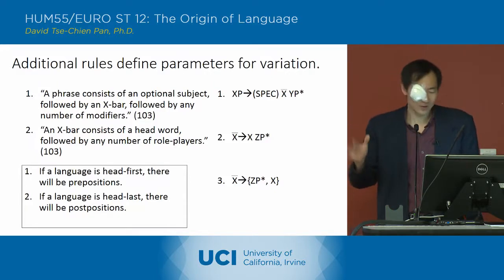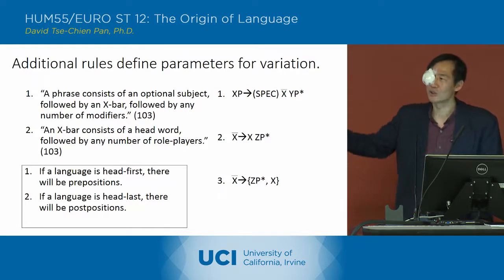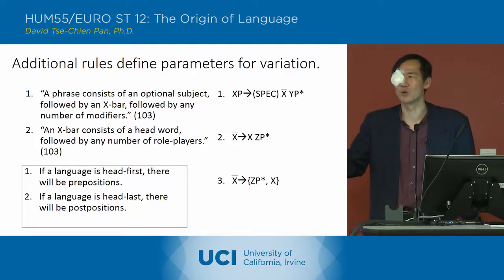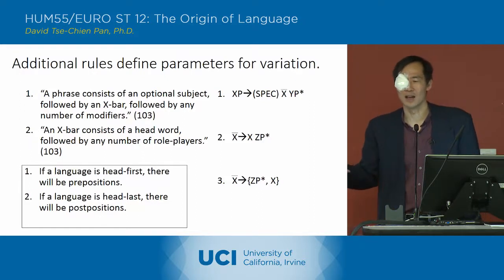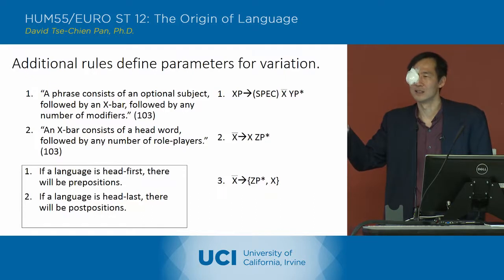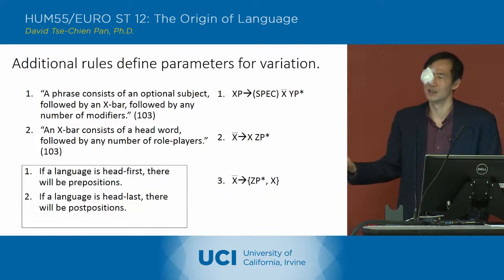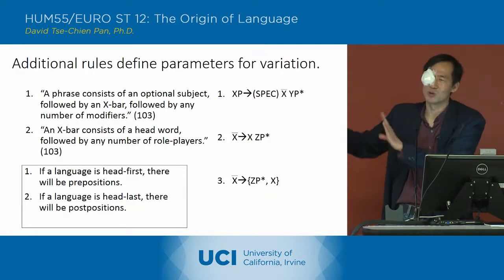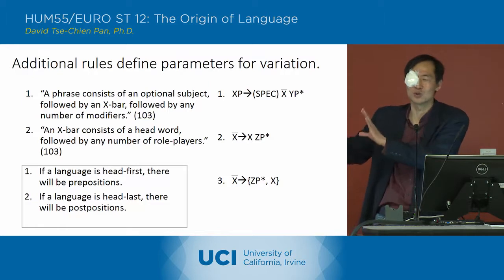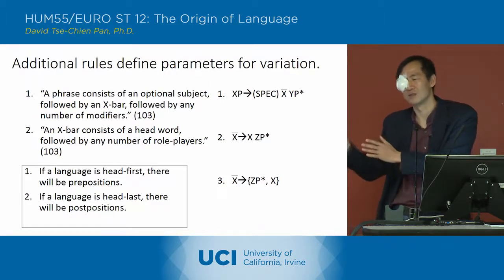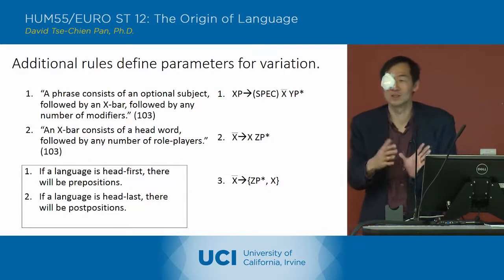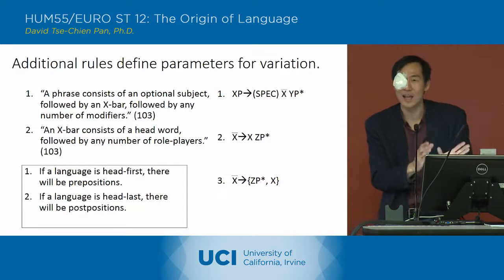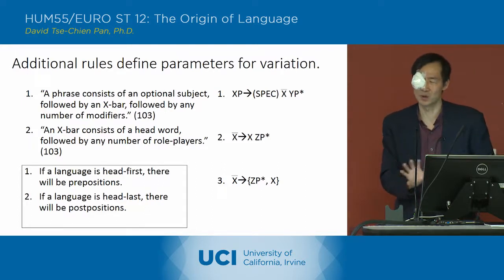In head-last languages, the head comes last — that's something that can vary between languages. He says if it's head-last, you'll also have postpositions: instead of saying 'of California' you say 'California of,' and instead of 'after the election' you say 'the election after.' He describes the structure not as a tree but as a mobile where things can turn — but they turn in a consistent way, so head-last languages consistently have postpositions, and head-first languages have prepositions.